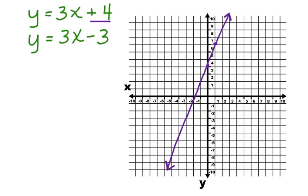3x minus 3. So this one has a y-intercept of negative 3. 1, 2, 3. And it has a slope of, again, 3. 1, 2, 3, and over 1. Let's connect that line. Notice that both of these equations have the same slope, so they are parallel. And here's the graph of these two parallel lines.